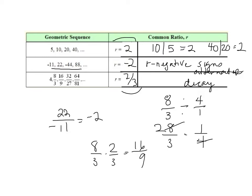When r equals 2 that would be a growth. When r is negative, that is not exponential — r has to be positive.